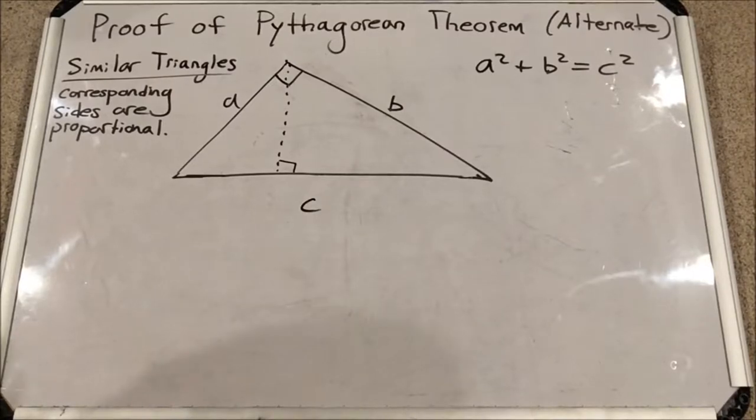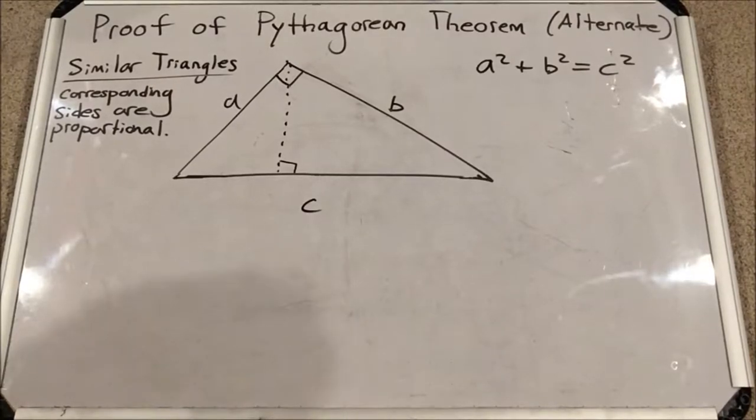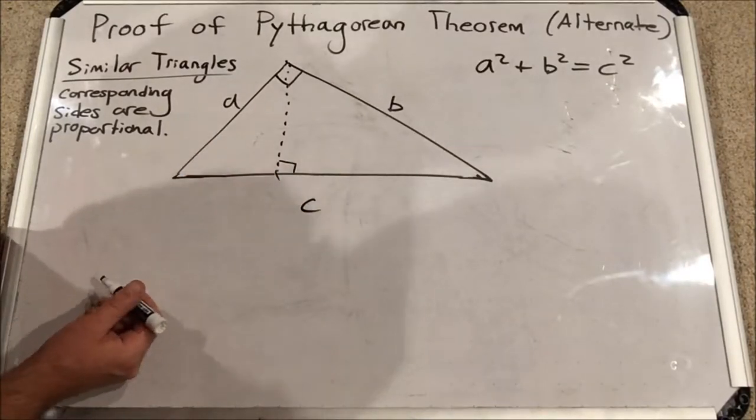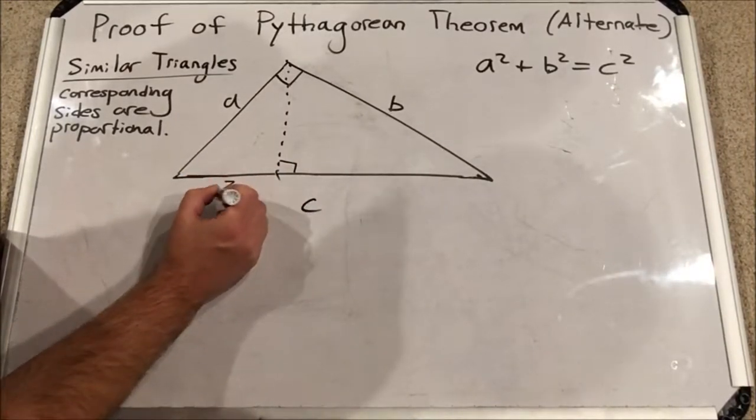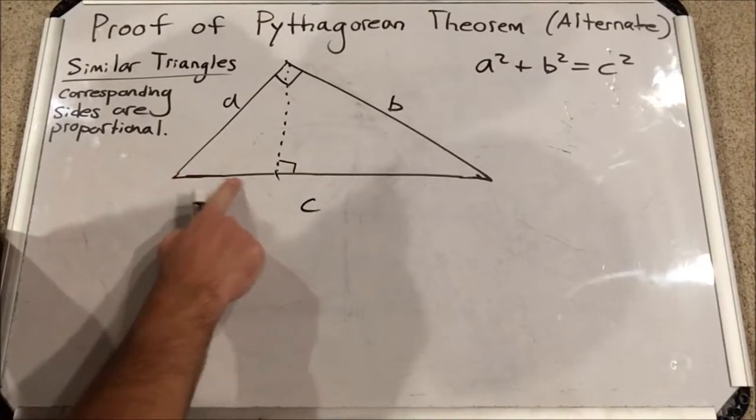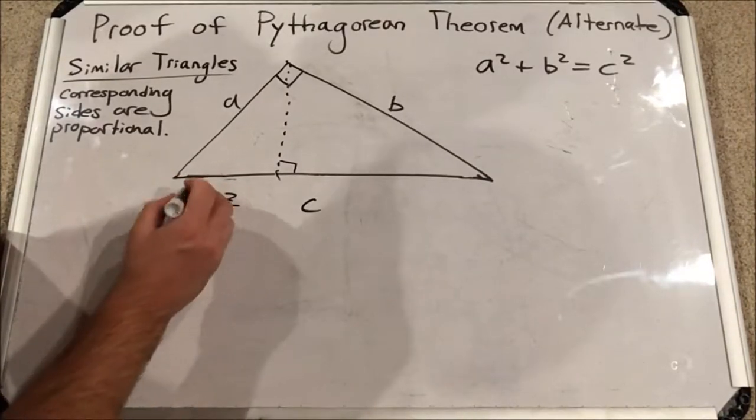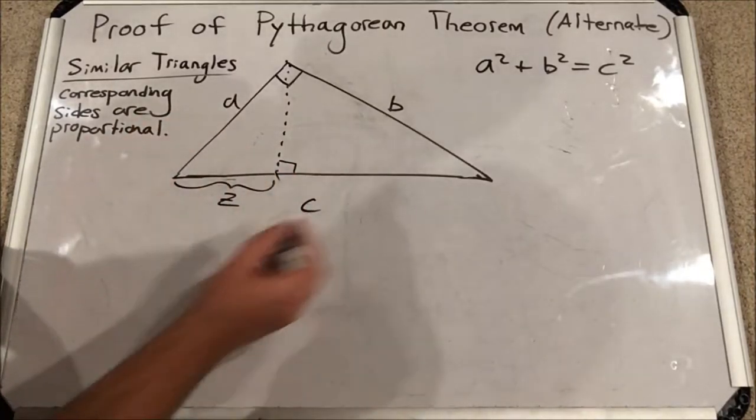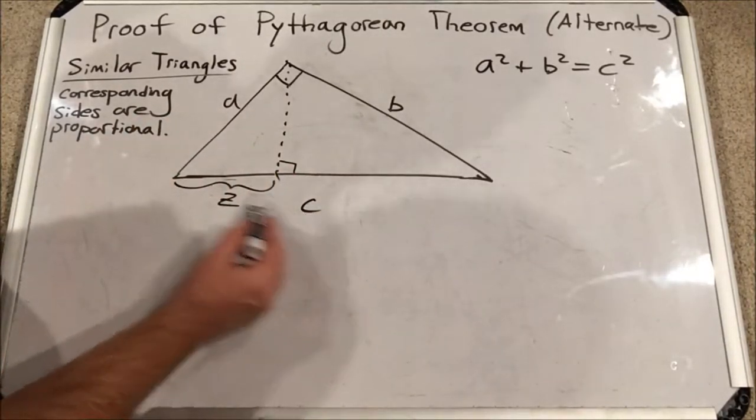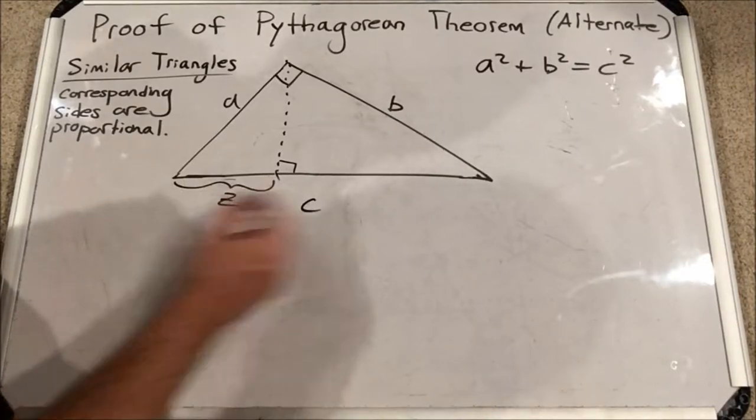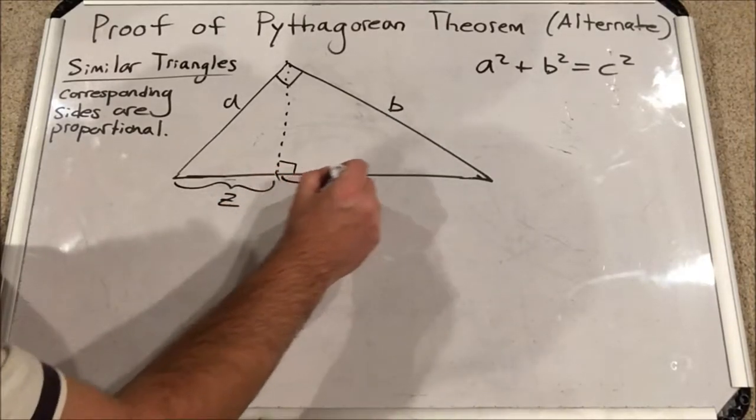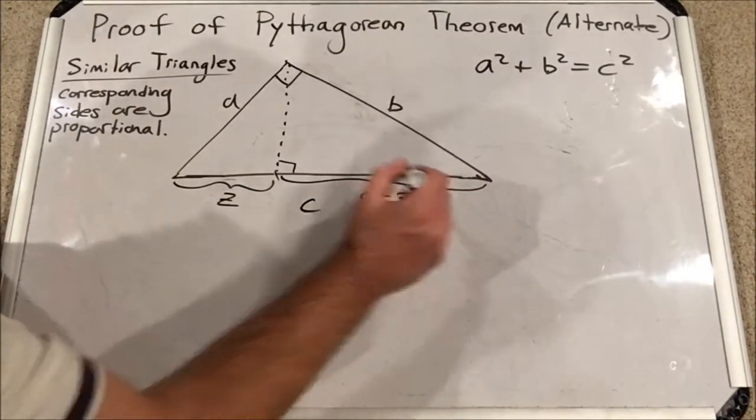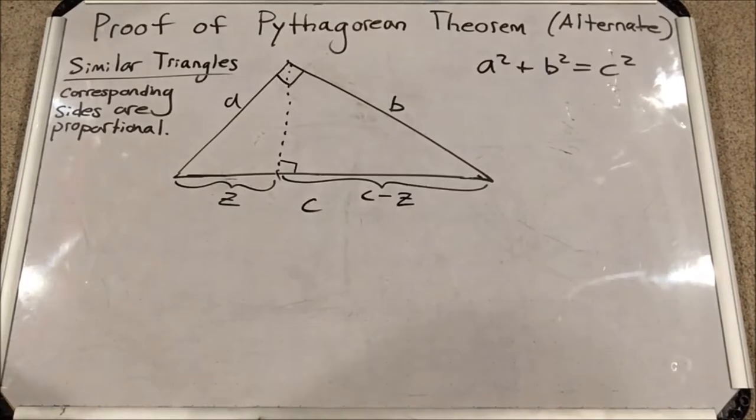Now I'm going to label the sections of side C that are cut by this altitude right here. I'm going to label the short part here Z. So this section, I'll move this down, this section right here is Z. Then over here, this would be the leftovers of C. So I'd subtract Z from all of C and I'd get this portion. I'm literally going to label that C minus Z.